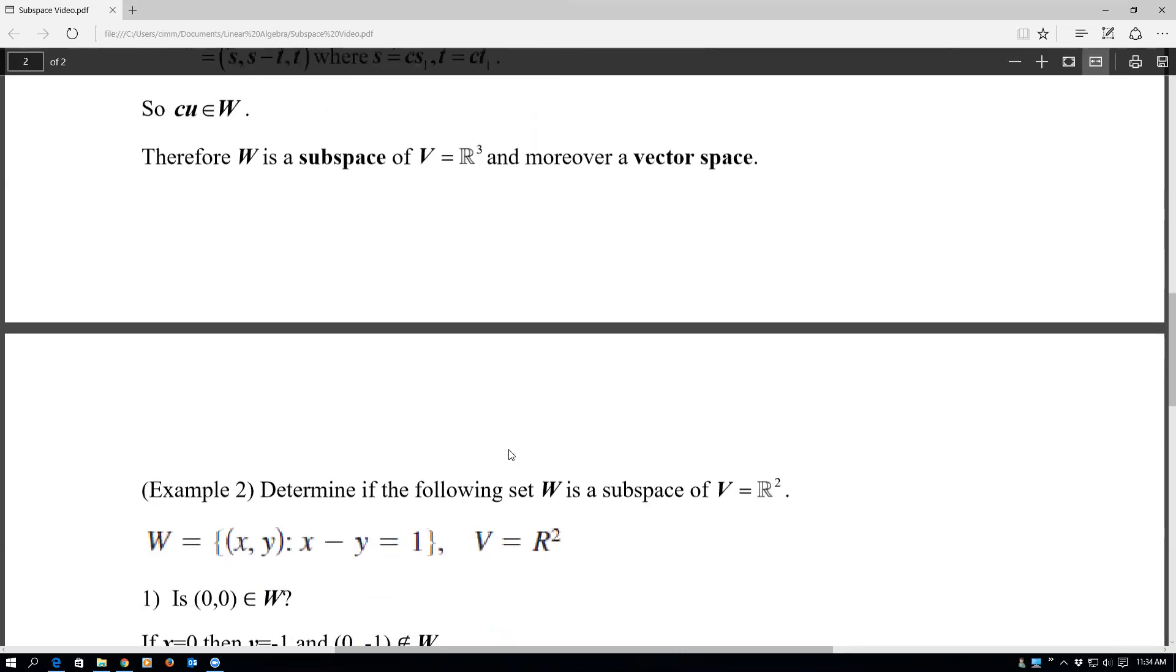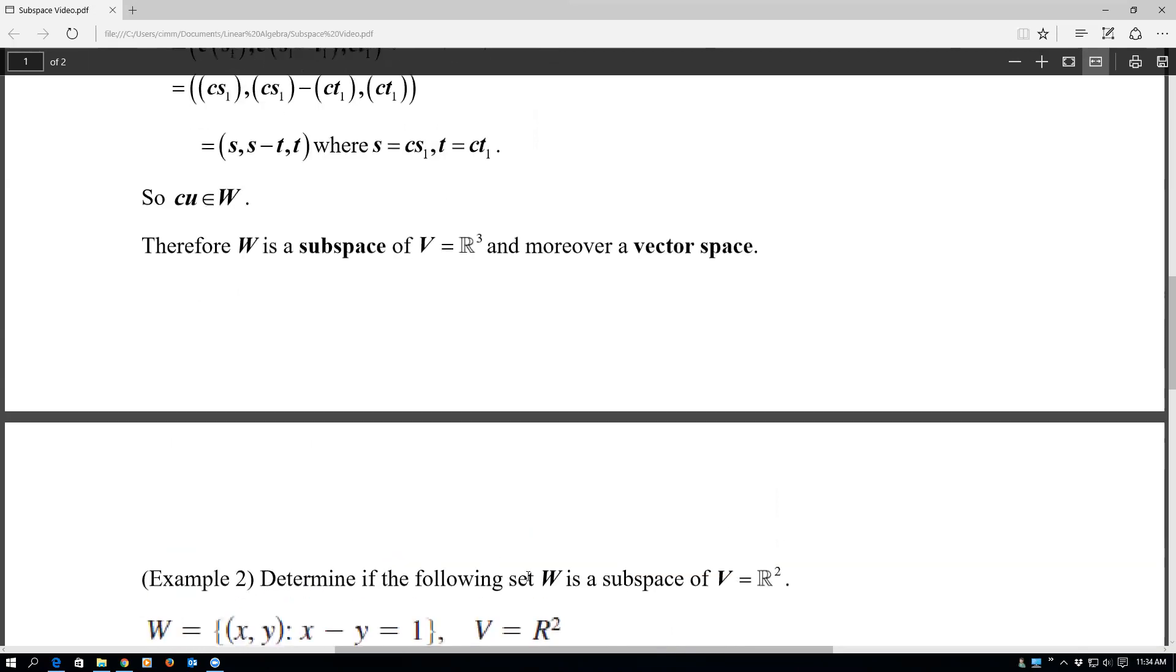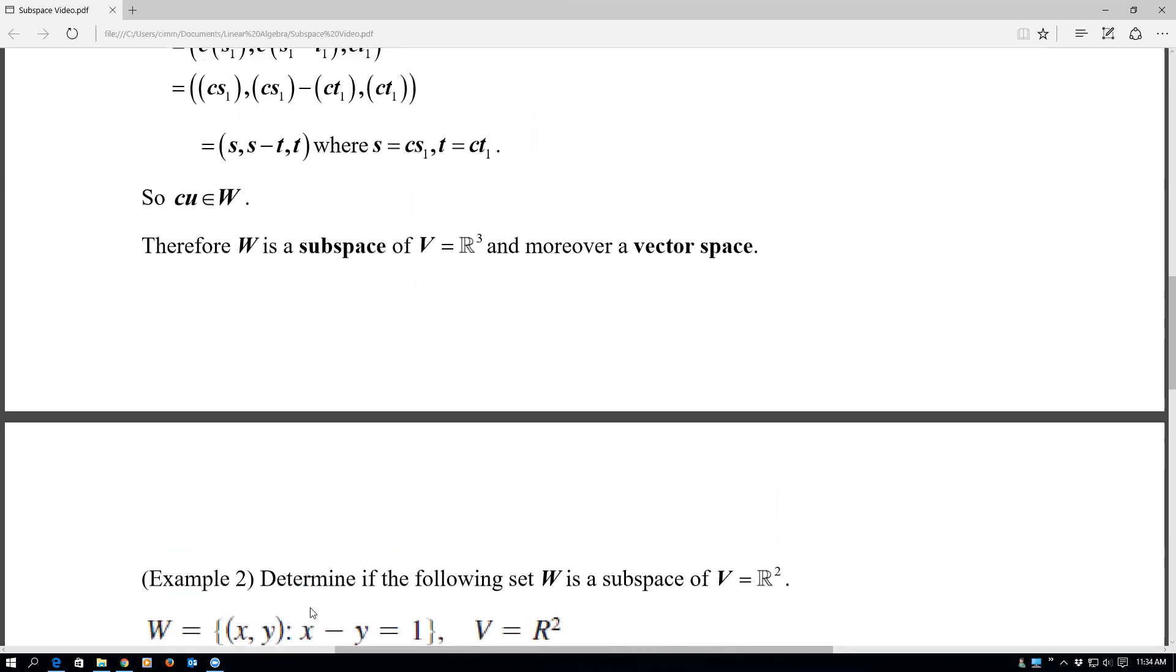Let's look at another one. So here we have, let's look at this vector in R², defined by all ordered pairs X and Y, such that X minus Y is equal to 1. So that has to hold, where V is equal to R². So we're going to see if this is a subspace of the vector space R². We know that R² is a vector space.